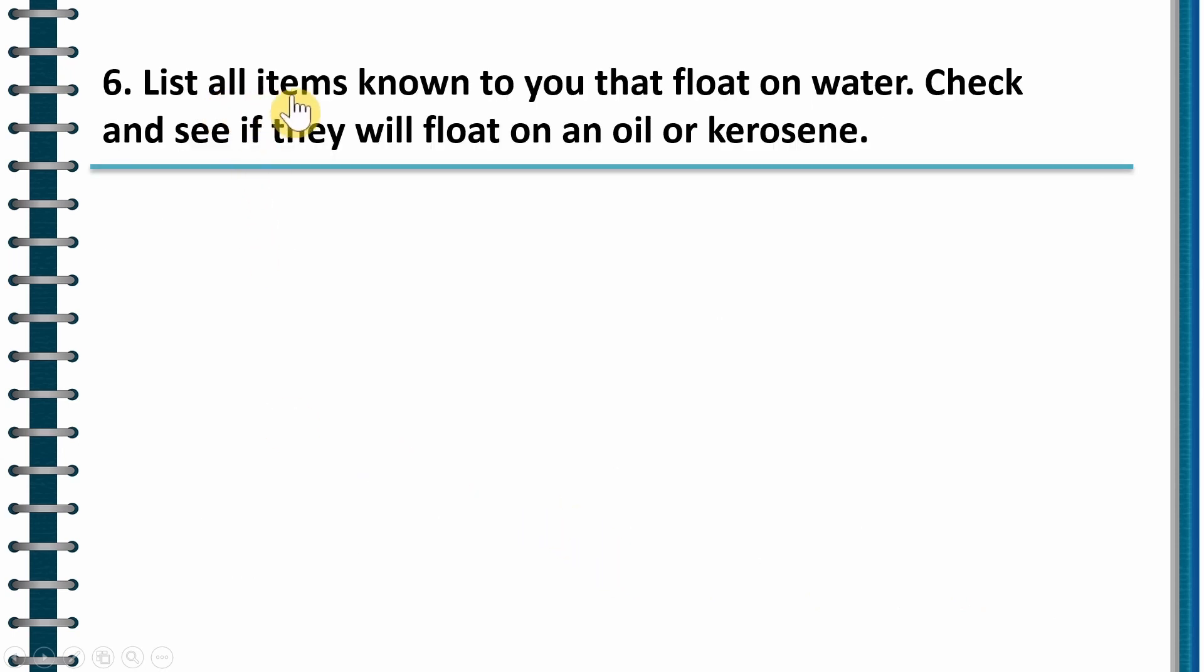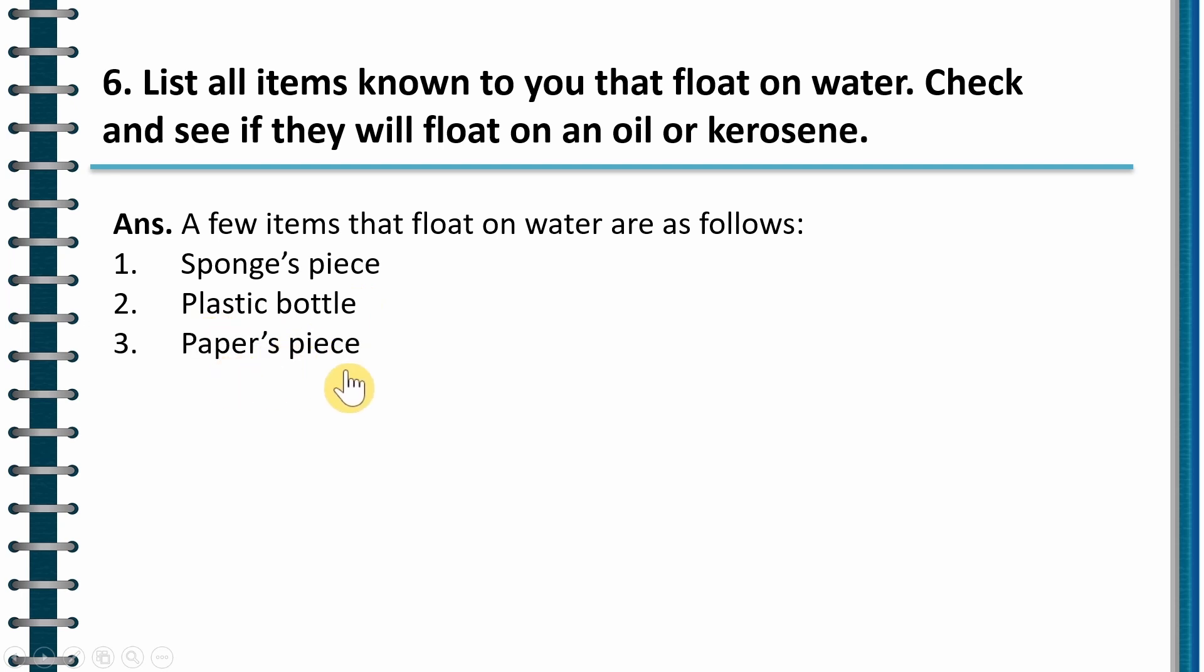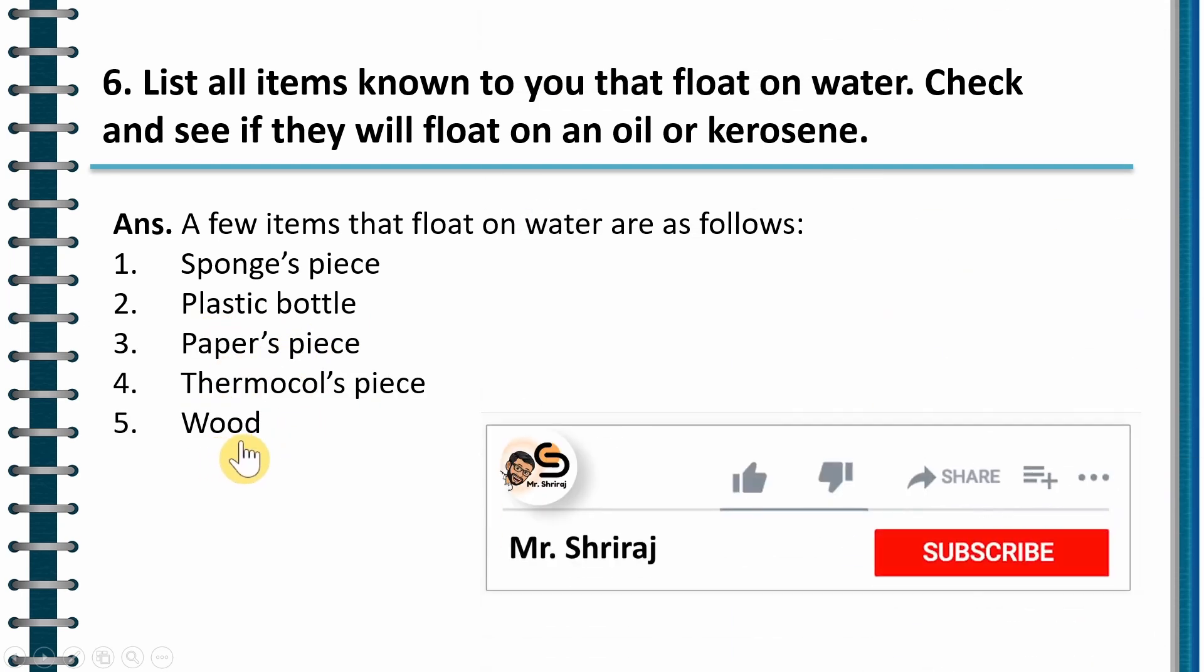Next question. List all items known to you that float on water. Check and see if they will float on an oil or kerosene. Here you will write, a few items that float on water are as follows. Sponge piece, plastic bottle, paper piece, thermacol piece, wood, plastic ball, corn. All these items will float on water.